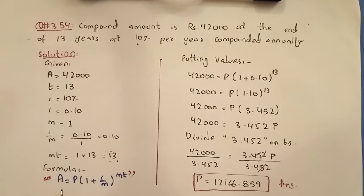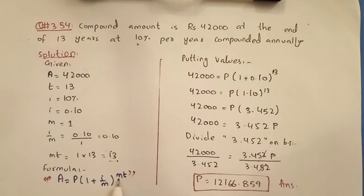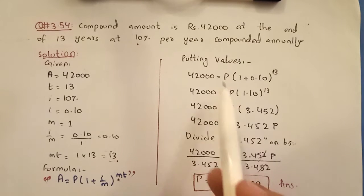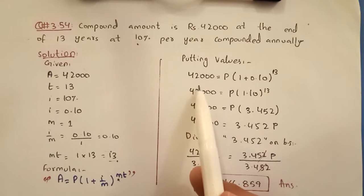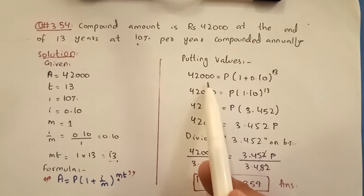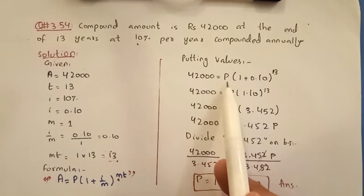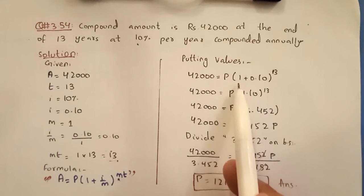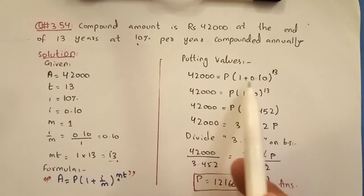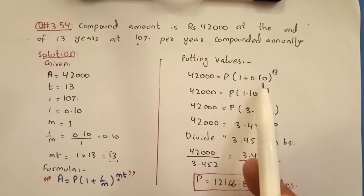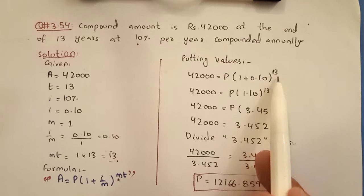Now we put the formula. The formula is: A is equal to P bracket 1 plus I divided by M, whole power M times T. Putting the values: 42,000 is equal to P bracket 1 plus 0.10, whole power 13.